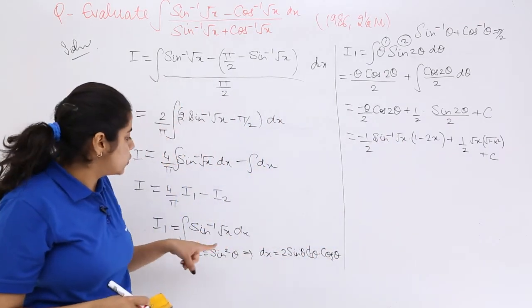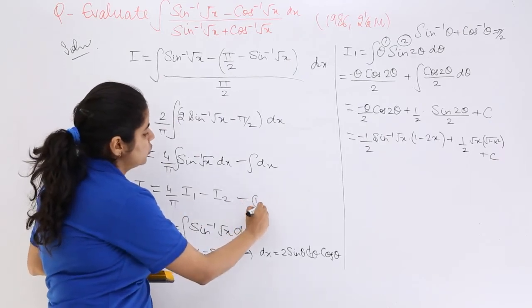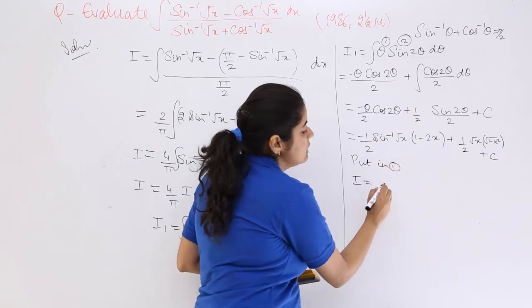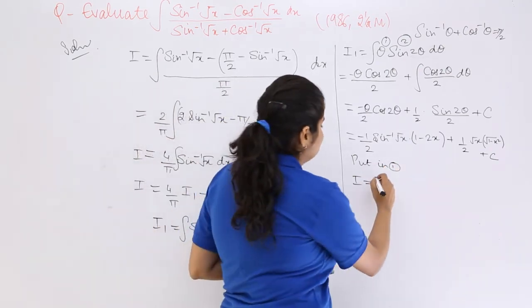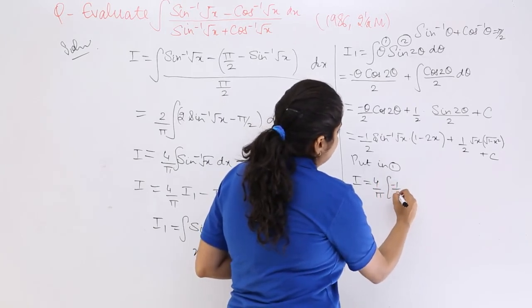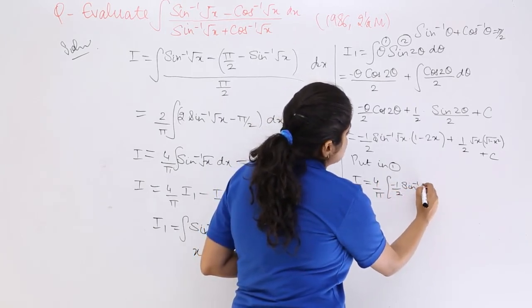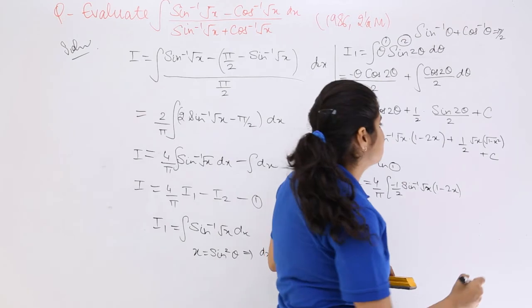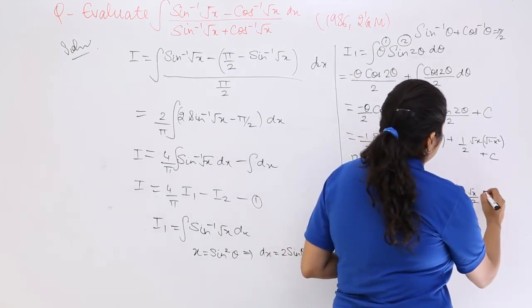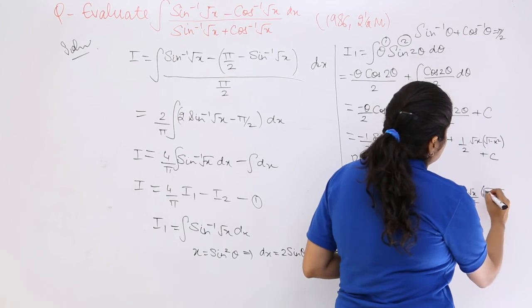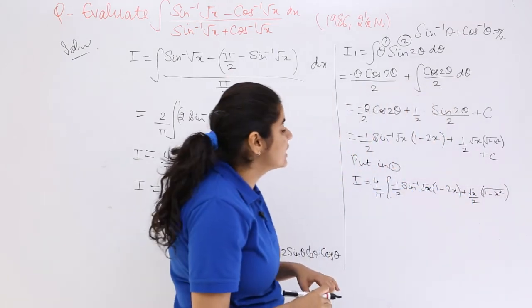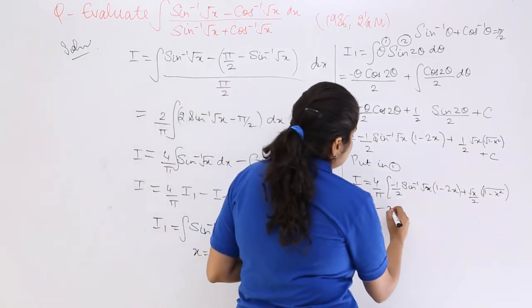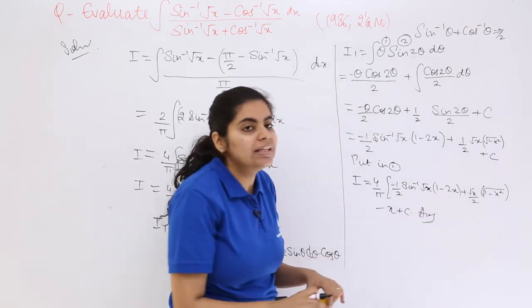So I write: I equals 4 over π times minus 1/2 sin inverse root x times (1 minus 2x) plus root x by 2 times root(1 minus x), plus c, minus I2. What is I2? Minus x plus c. So this should be the answer.